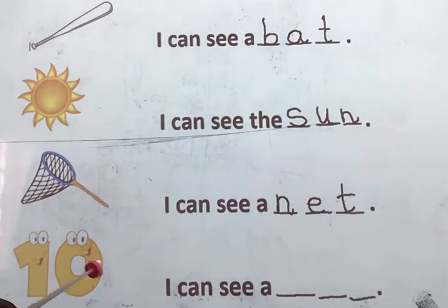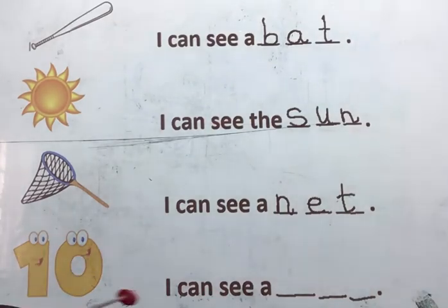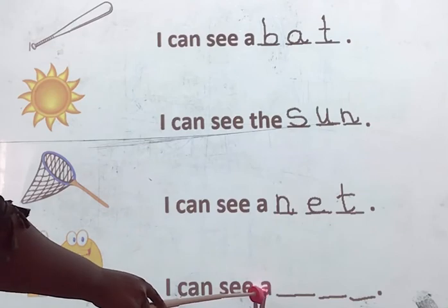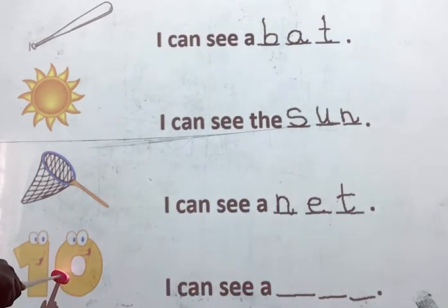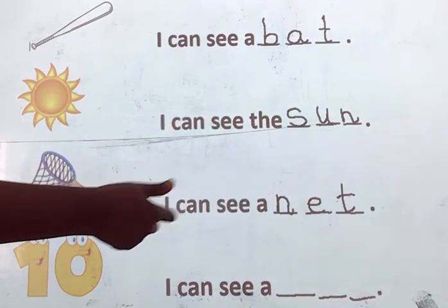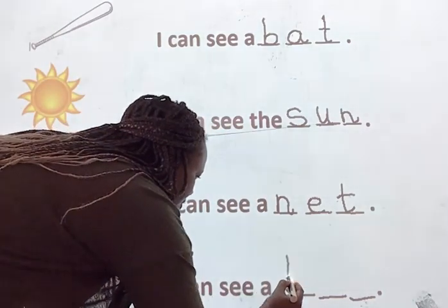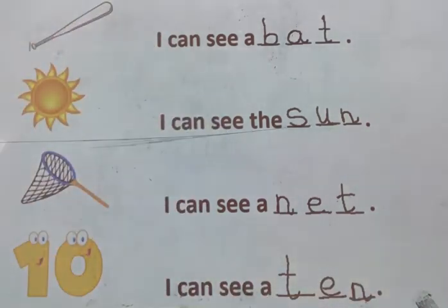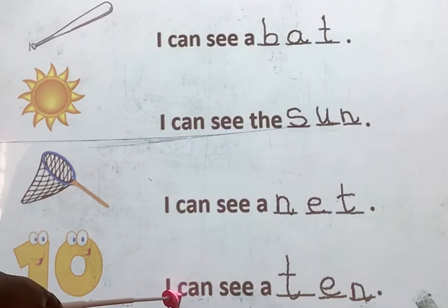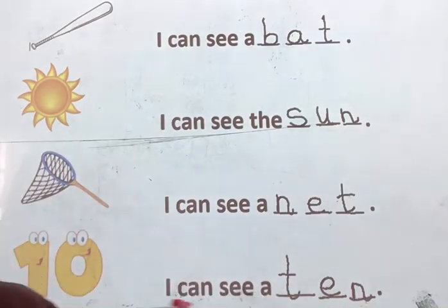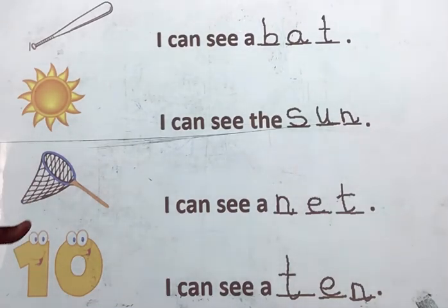Now, the next one is ten — the number ten. Let's read: I, can, see, a, ten. Now give me the sounds in ten: T, A, N. Now let's write: T, A, N. Now let's read the sentence: I, can, see, a, ten. Can you see a ten? Yay! Good job.